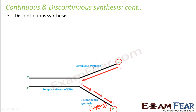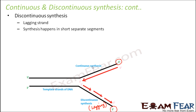DNA polymerase cannot initiate the process on the lagging strand. Somebody else was needed to initiate the process or to provide a free three-prime hydroxyl group, and that is done by the enzyme primase. On the lagging strand, synthesis happens in short separate fragments.